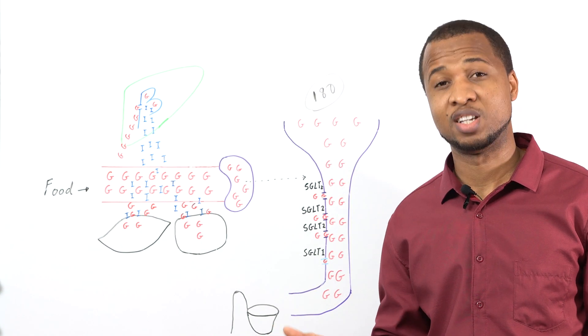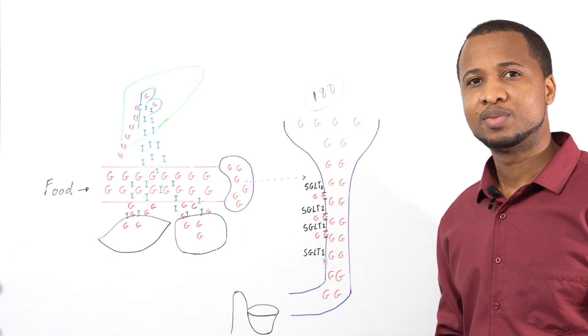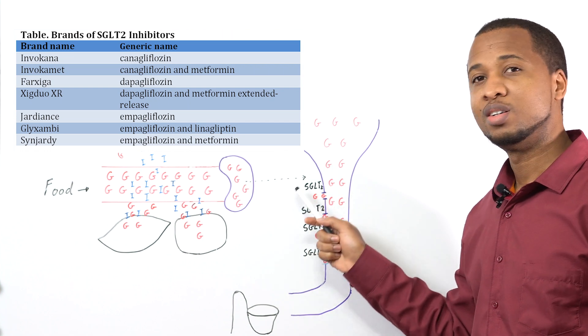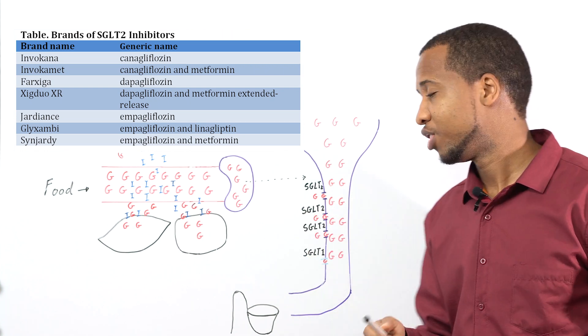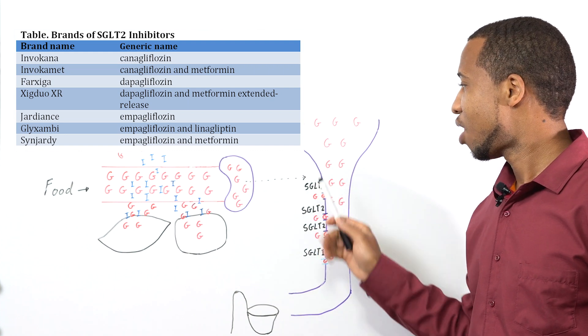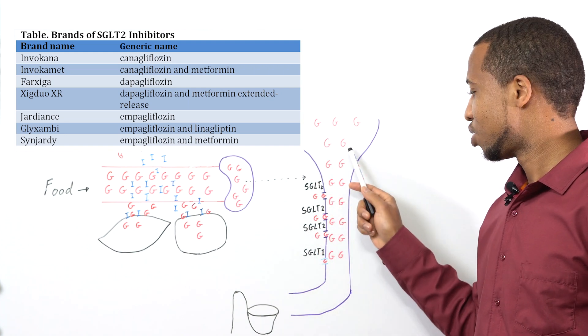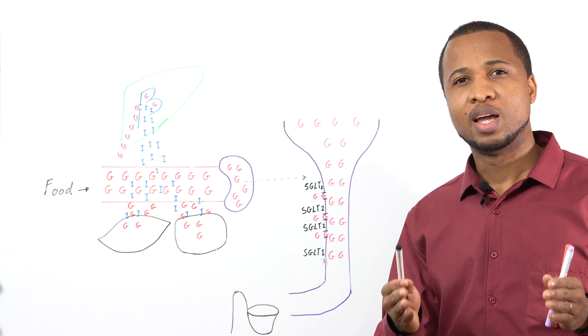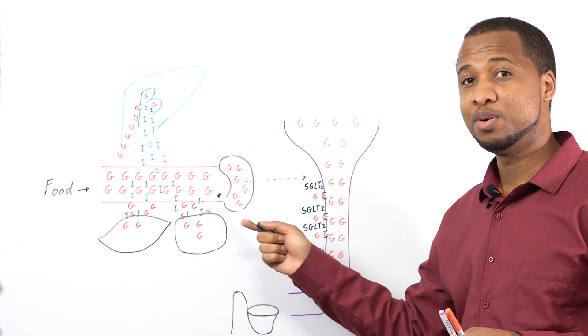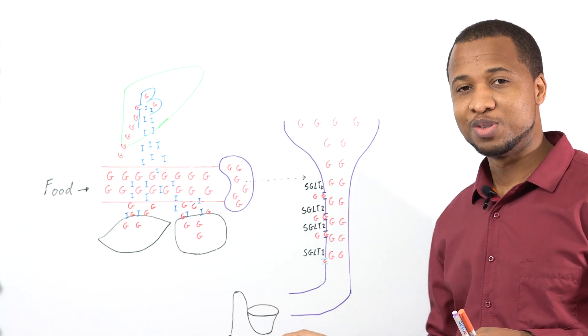Now there's one medication that works here. Maybe if you want to know about it, I'll make a video on it. But these medications will block these transporters so glucose will go to urine. And when you're taking those medications, know that you're buying food and half of it is going to the toilet.